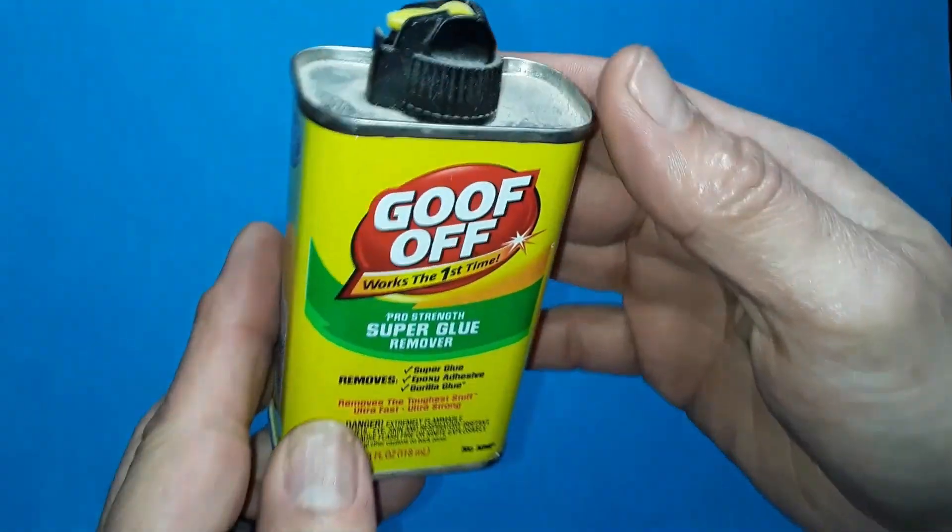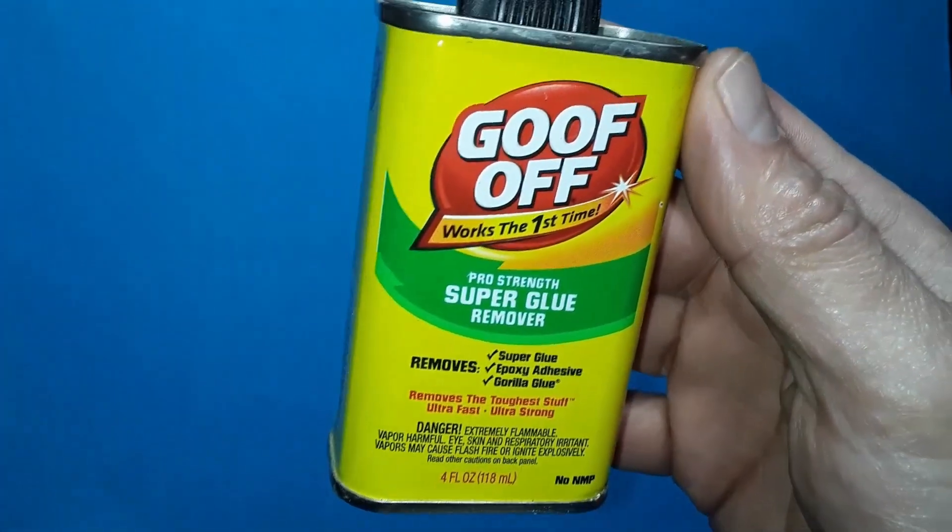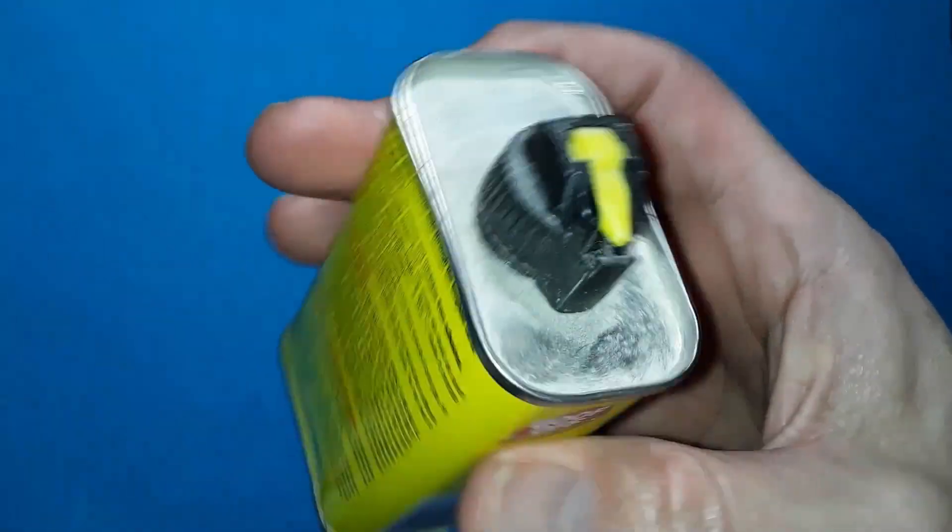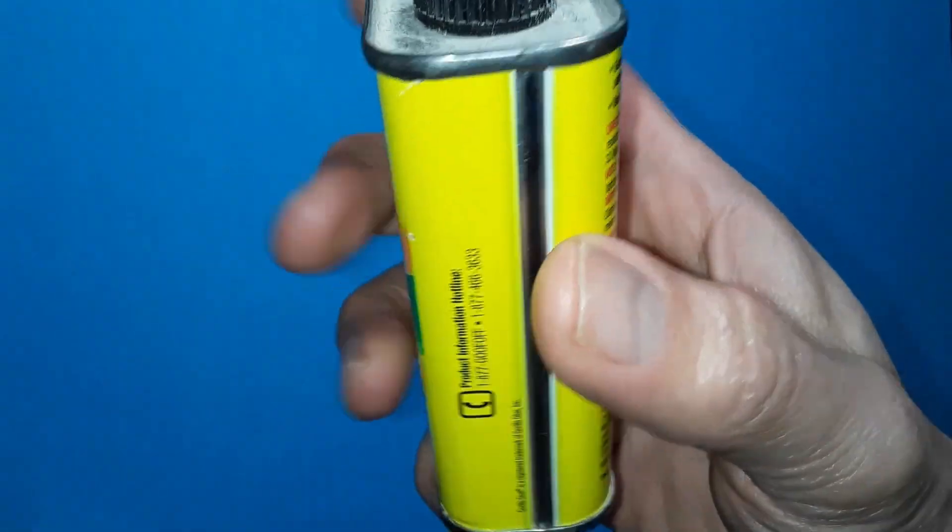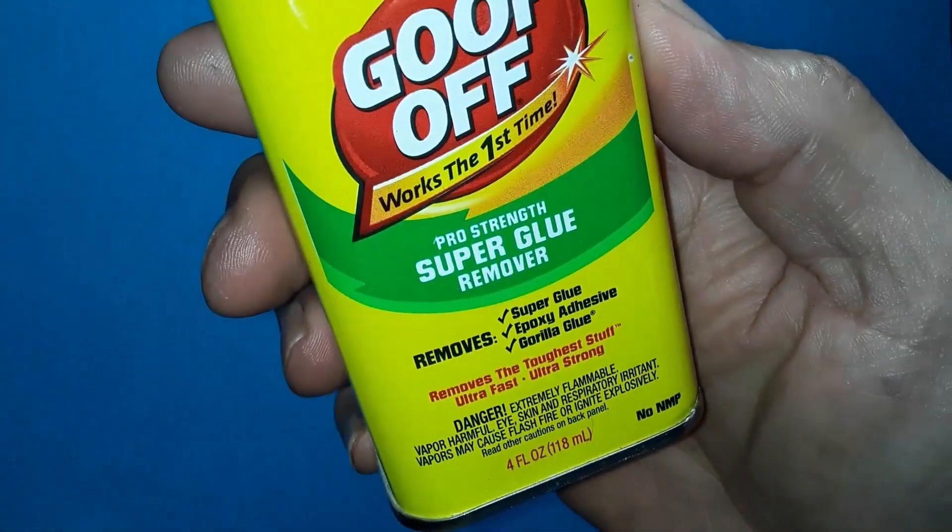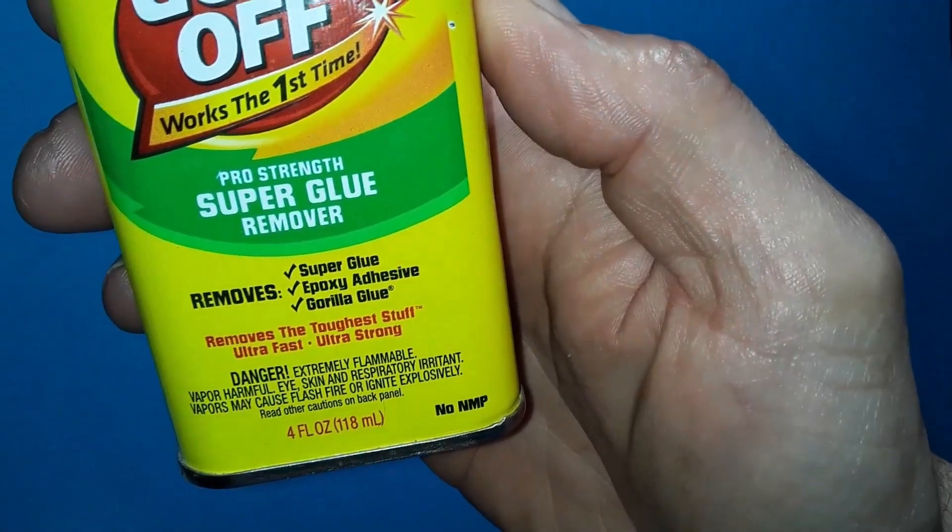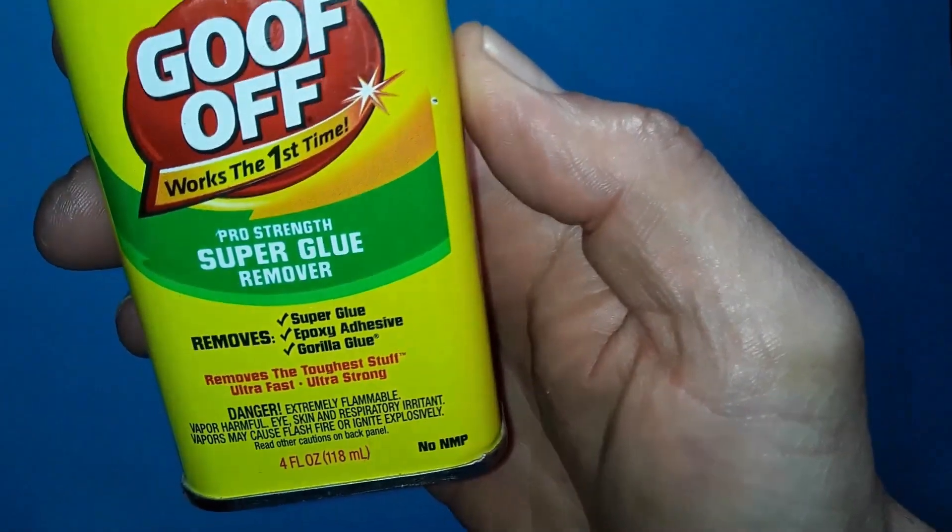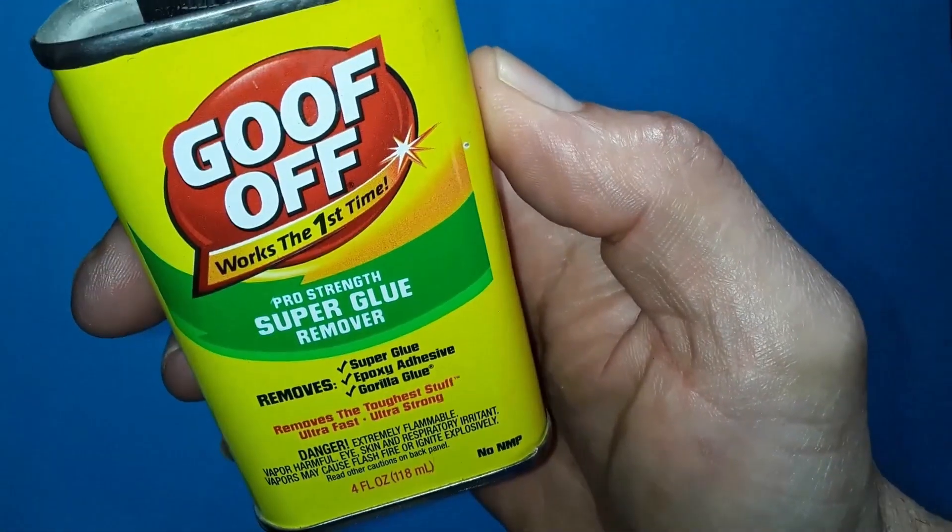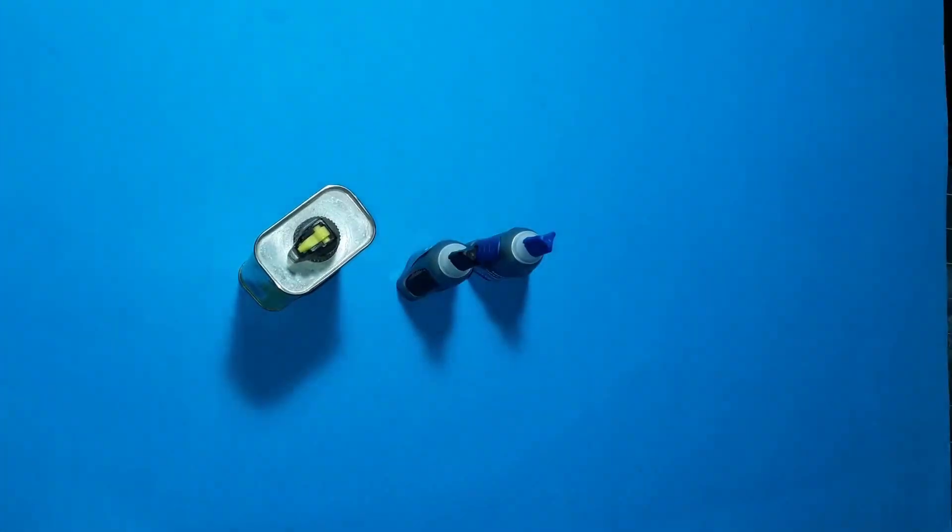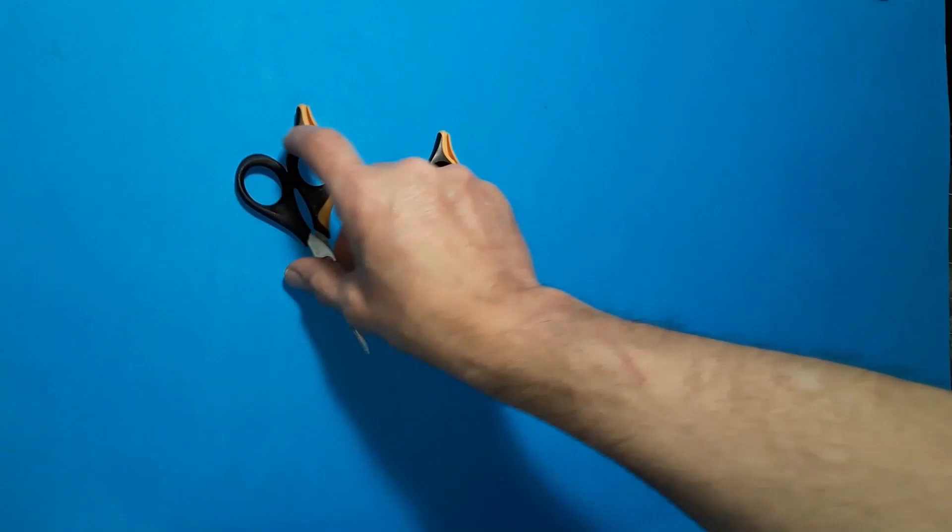You'll also notice that we have a bottle of Goof-Off. This is their pro-strength super glue remover. This is an essential product when working with super glue and cans. If you have worked with these materials for long enough, you know that it's impossible to keep from getting glue on the can materials. Goof-Off easily removes super glue residue and we recommend it if you're going to work with cans for any amount of time, it is an essential tool.